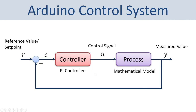Here you see an overview of a basic control system in general. This is the control system we are going to create using the Arduino platform. We have a process — in this case we will use a mathematical model of the process in the form of a differential equation — and then we will implement and use a PI controller to control this process at a given setpoint.